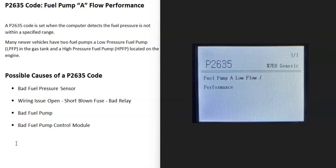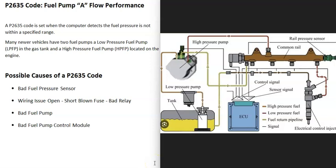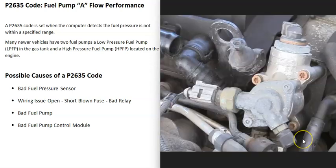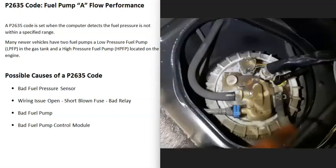Today I'm talking about a P2635 code — what it is and how you go about fixing it. A P2635 code is a fuel pump flow performance code. Basically, a vehicle is going to have a fuel pump, and depending on the vehicle there could be one or two fuel pumps. Many vehicles these days have a low pressure fuel pump inside the gas tank and a high pressure fuel pump up at the engine. This can vary depending on the year, make, and model, so it's always a good idea to get a diagram for your specific vehicle. When you get this P2635 code, the computer is seeing some kind of problem with the fuel pump pressure.